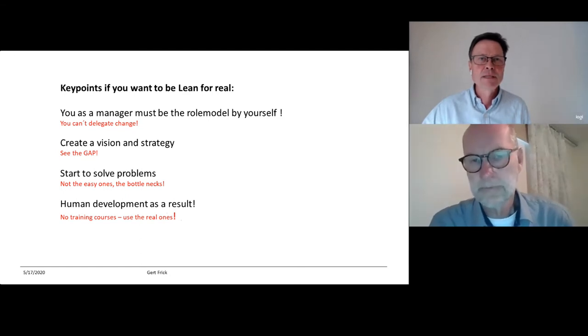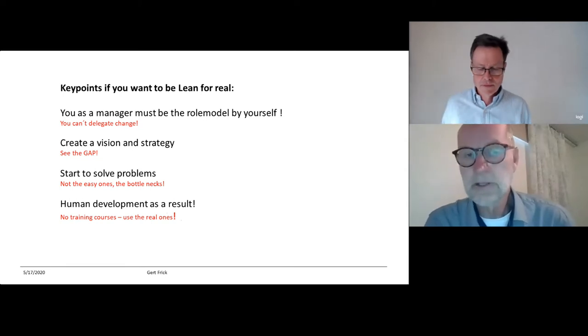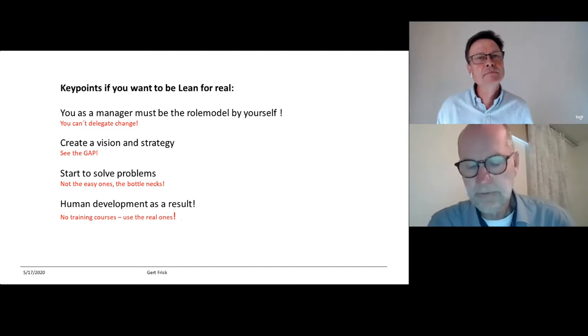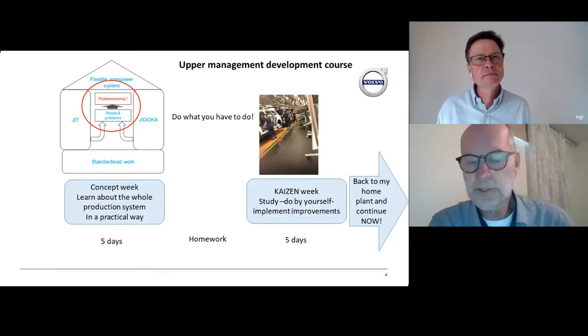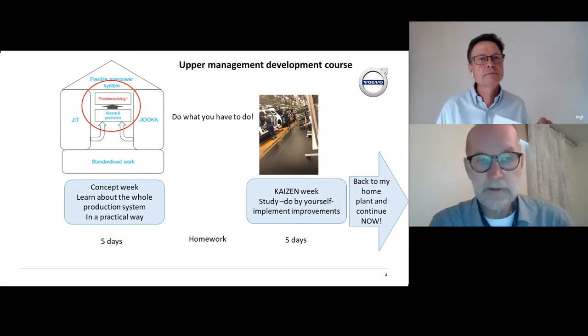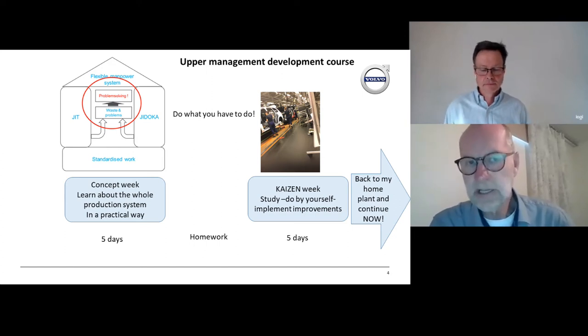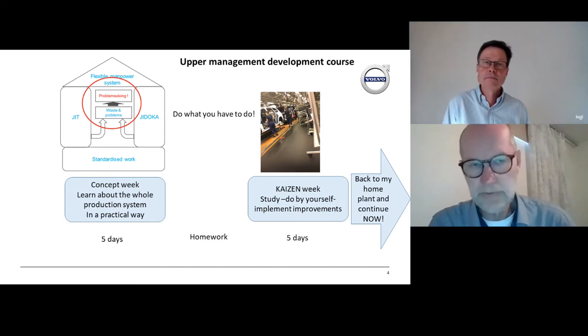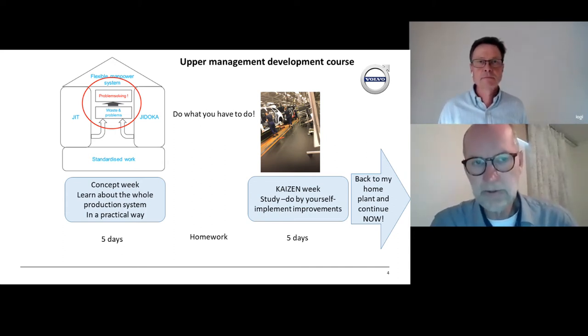Volvo is very lookalike as many other companies, a long history and of course you have developed a culture to take the company to where it is today. But to be competitive in the future you need to speed up the change, and the change of course is based on reducing the cost and do only the right things. We're talking about in the Volvo's case a group of 12 managers from all over the global system from China, Europe and US, selected by upper management. They are factory managers mainly that start with this course.